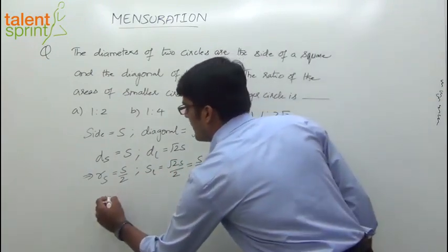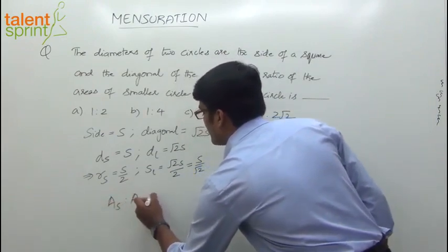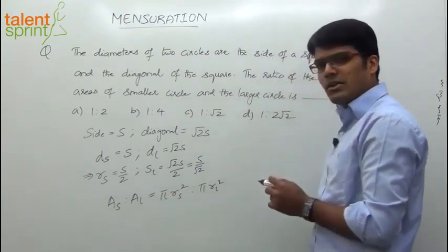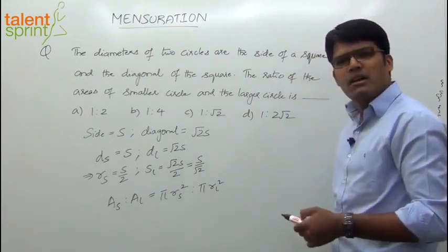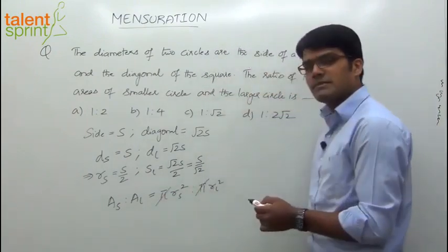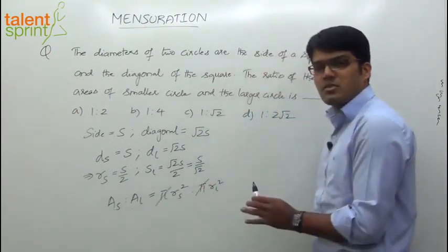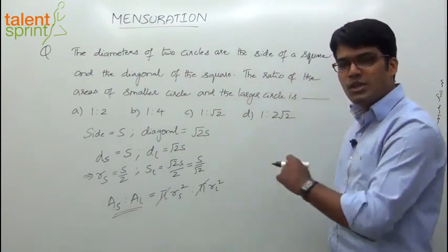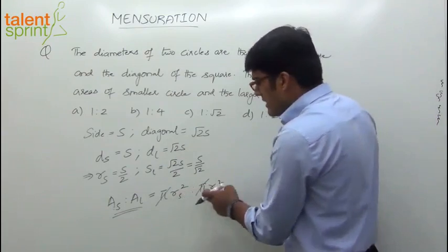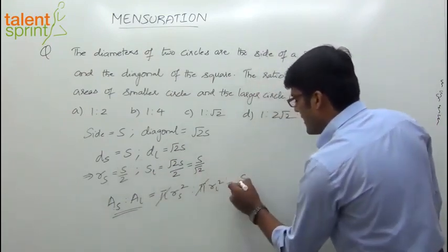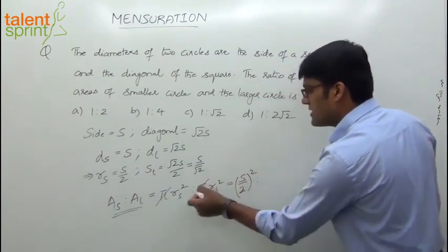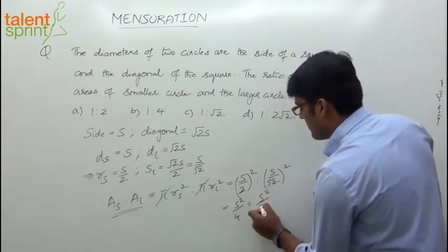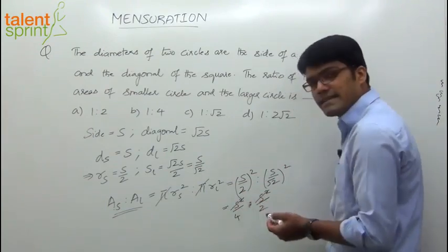Now find out the area. The ratio of area of smaller circle to area of larger circle is pi times radius of smaller circle squared, to pi times radius of larger circle squared. Note that pi immediately gets cancelled — area of a circle is proportional to radius squared. So the ratio equals radius of smaller circle squared to radius of larger circle squared, which is (S/2)² to (S/√2)². This gives S²/4 to S²/2. S squared cancels on both sides.